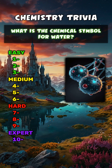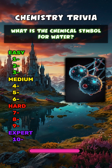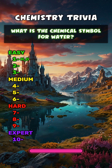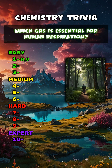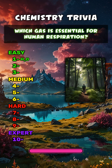What is the chemical symbol for water? H2O. Which gas is essential for human respiration? Oxygen.